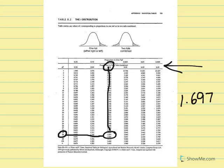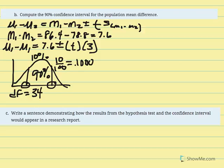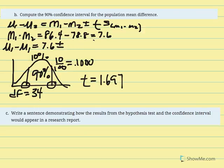The confidence interval doesn't include zero, giving us good reason to feel confident about rejecting the null hypothesis. The t value we use here is 1.697 — not our t statistic — it comes from the t table based on our confidence percentage. So 1.697 multiplied by 3 gives 5.091, and we compute the range from 7.6.